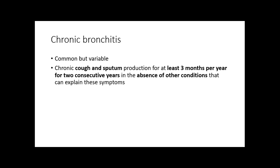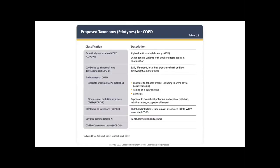Chronic bronchitis has now come back in vogue. It is common but variable. The definition is cough and sputum production for at least three months per year for two consecutive years. Importantly, you need to exclude any other conditions that may be contributing to this cough. It's now being more recognized.